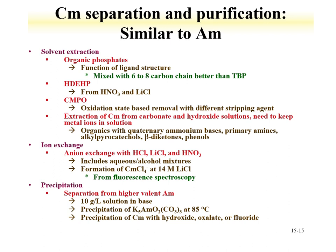Curium separations are very similar to what has been described for americium. Tributyl phosphate can be used at lower acid concentrations than are useful for plutonium and uranium. HDEHP can be used in nitric and lithium chloride systems. CMPO can be used similarly to what was described for americium. Ion exchange with lithium chloride, nitric, and HCl systems exploits the formation of anionic chloride species at high lithium chloride concentrations. Precipitation of americium-5 carbonate can also separate americium from curium, and purification of curium by precipitation with hydroxides, oxalates, or fluoride is similar to conditions used for trivalent americium.